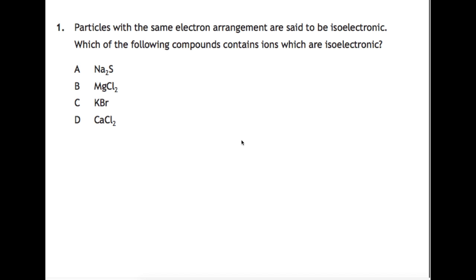So let's start here with question 1. Particles with the same electron arrangement are said to be isoelectronic. Which of the following compounds contain ions which are isoelectronic? You can use your data book and you can find the periodic table which has the electron arrangements, and you can use that to help you work out what the ions electron arrangements would be.